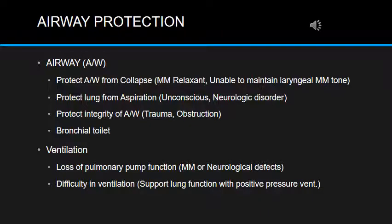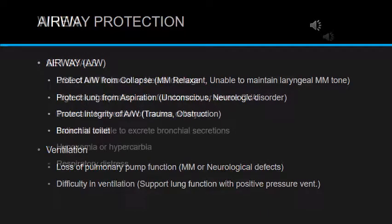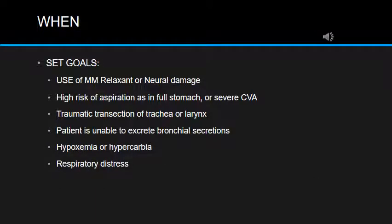Another reason we intubate or secure the airway is when ventilation is not sufficient to maintain good respiratory function. We have to support the patient with artificial ventilation and positive pressure ventilation. In that case, we have to secure the airway and place the tracheal tube to be able to give positive pressure ventilation. We have already discussed securing the airway via endotracheal tubes, supraglottic devices, or tracheostomy.